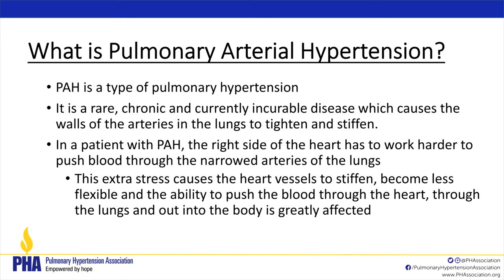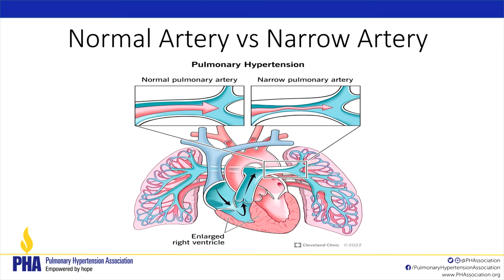What is pulmonary arterial hypertension? PAH is a type of pulmonary hypertension — a rare, chronic, and currently incurable disease. It causes the walls of the arteries of the lungs to tighten and stiffen. In a patient with PAH, the right side of the heart has to work harder to push blood through the narrowed arteries, putting extra stress on the heart. Think of an old corroded water pipe — over time the resistance makes it harder to pump water through. That's what we mean by the artery stiffening and resistance.